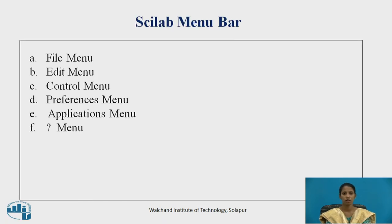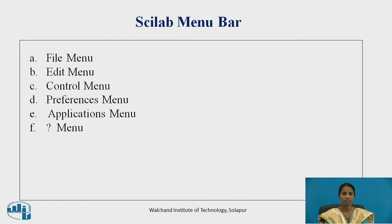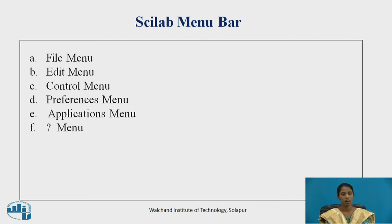These are the Scilab menu bars. There are 6 menu bars in Scilab. File menu — this is same as in other software packages. Edit menu — in this you can cut, copy, paste, and select all. Control menu — in this you can resume, interrupt, or abort the functioning of Scilab.